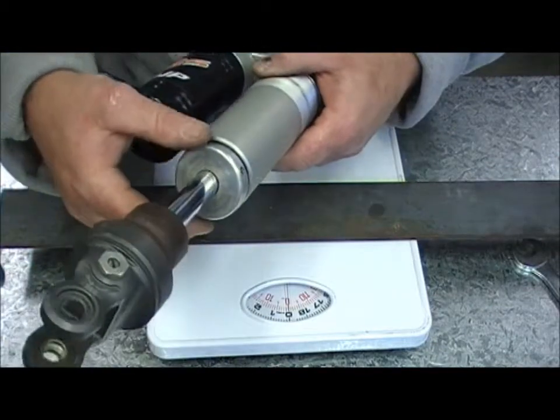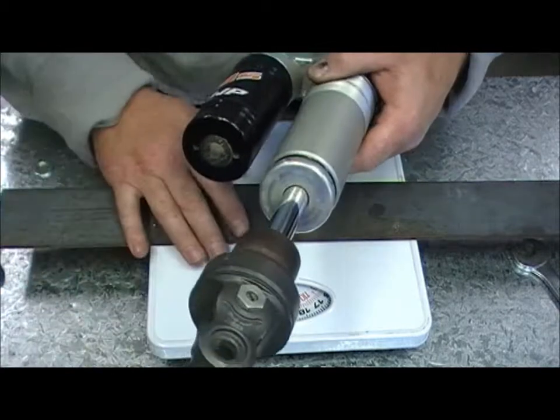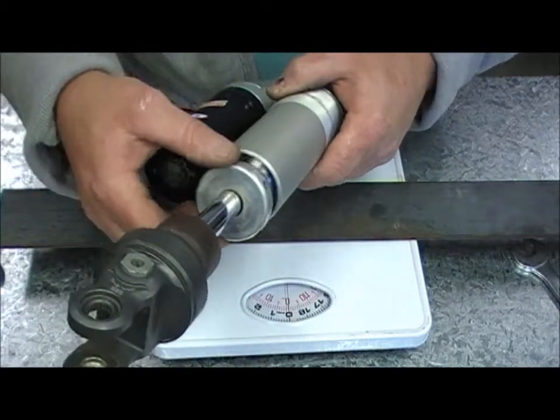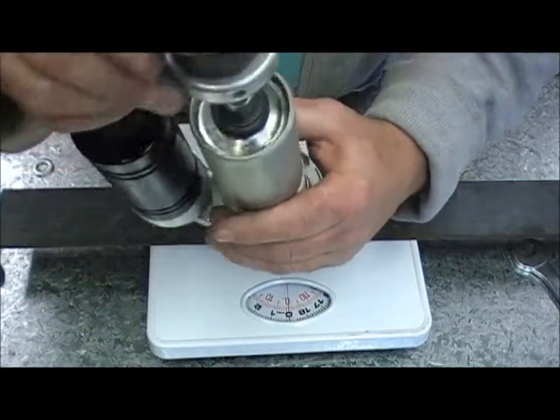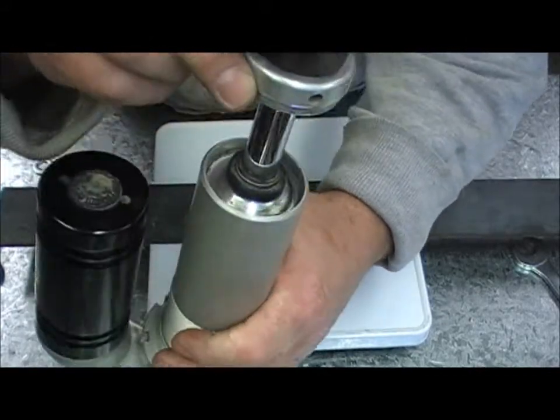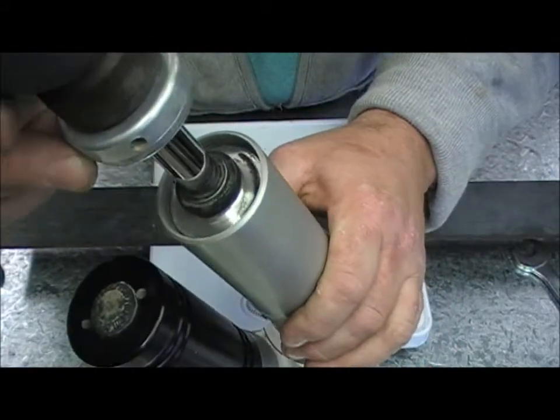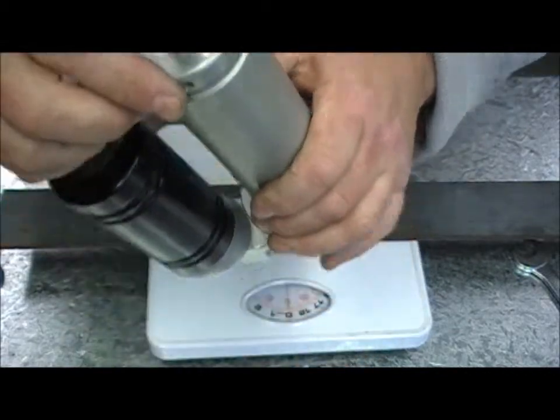I'm going to show the pressure it takes to push in this shock shaft with a set of bar end scales. This is with the original seal head in its original position, so this is as the shock would be standard.